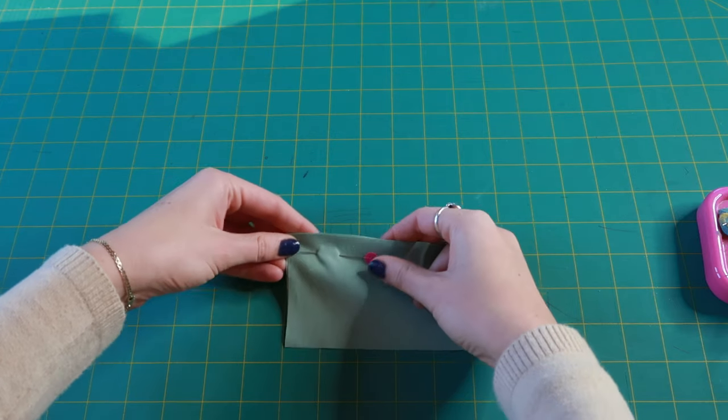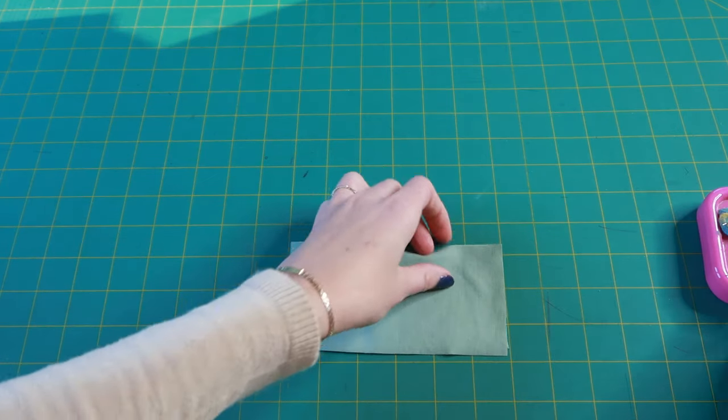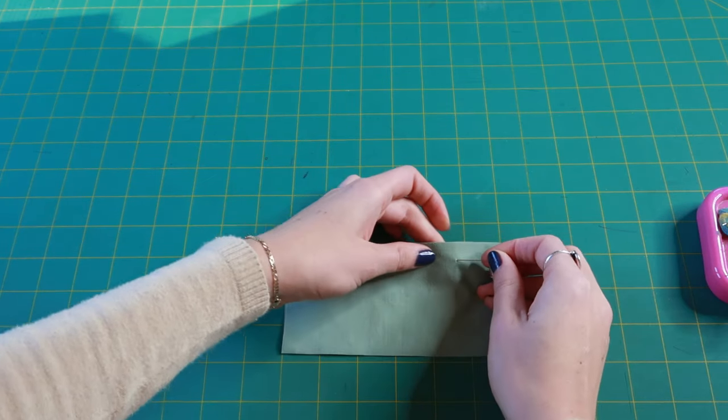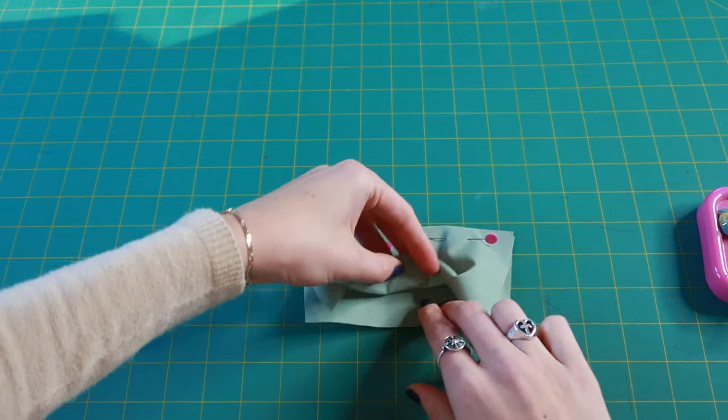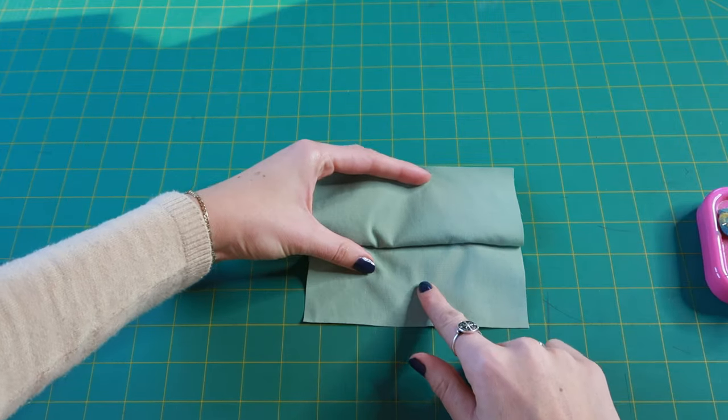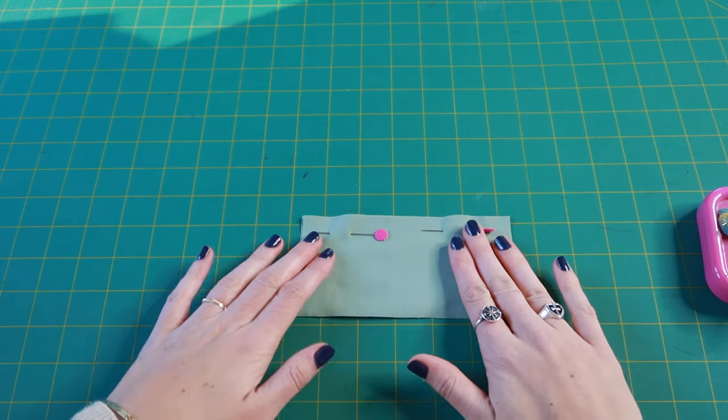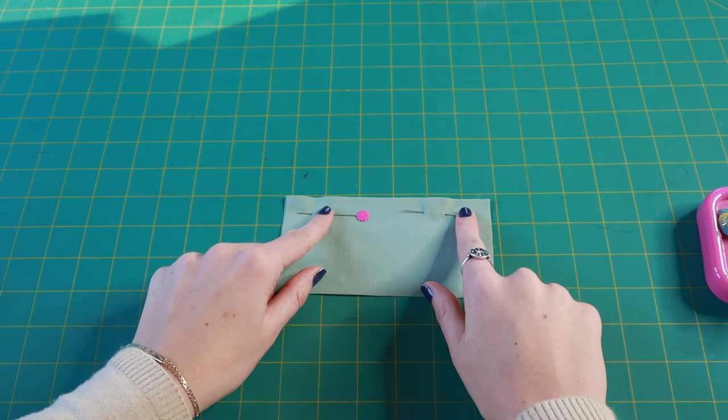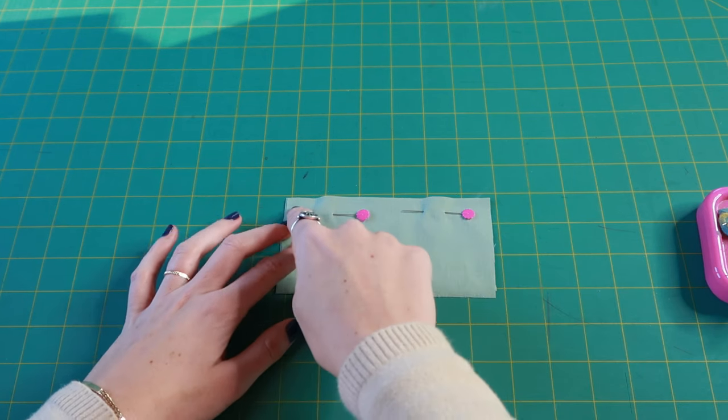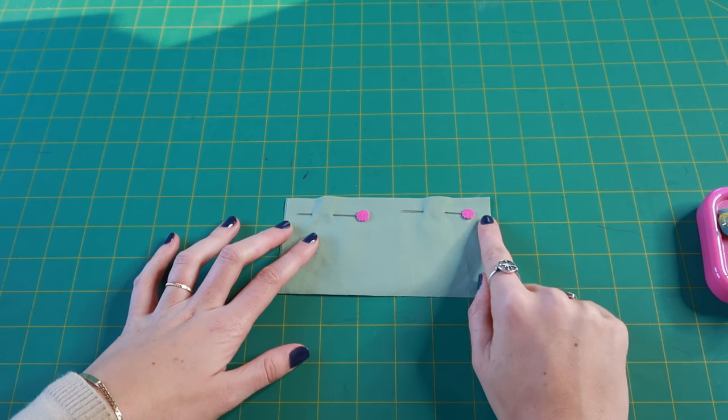If you are using a print fabric you are going to want to pay attention to the right side of the fabric. The right side of the fabric is going to be on the inside so that it is right sides touching or print to print. We're going to lay our fabric on top of itself, put two pins to hold our layers together, and then we are going to go sew a plain seam.